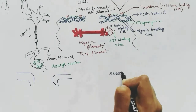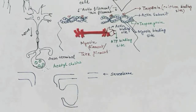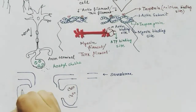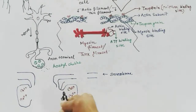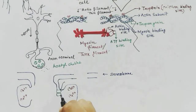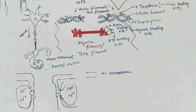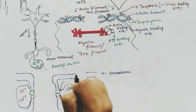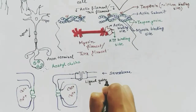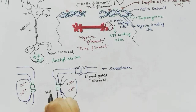The sarcoplasmic reticulum stores calcium, but it has a gate which does not allow calcium to go out without a signal. There is also a gate that accepts acetylcholine. The green gate is for calcium release, and the gate that accepts acetylcholine is a ligand-gated channel, which opens in response to ligands like acetylcholine.